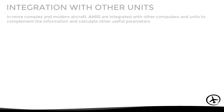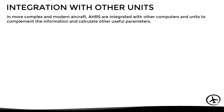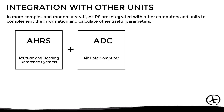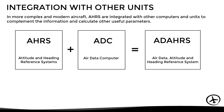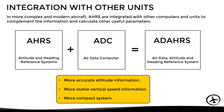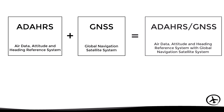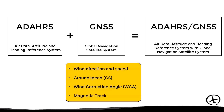As with the air data computer, in more complex and modern aircraft the AHRS is integrated with other computers and units to complement the information and calculate other useful parameters. For example, it can be integrated with an air data computer, obtaining the Air Data Attitude and Heading Reference System. This new unit increases the accuracy of attitude information, gives a more stable vertical speed indication, and compacts two units into one. It is also common to find this unit integrated with a global navigation satellite system, which allows calculating parameters such as wind direction and speed, ground speed, wind correction angle, and magnetic track.